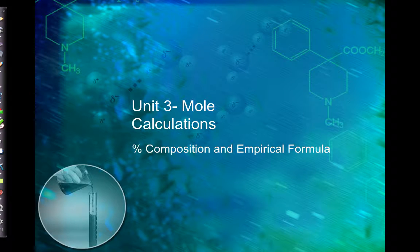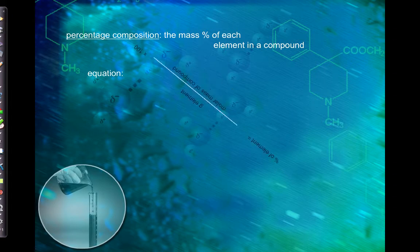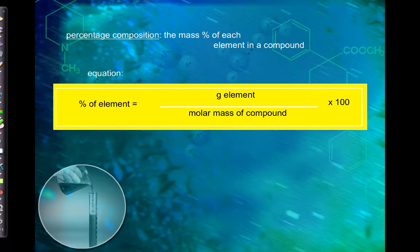In this video, we're going to review percent composition, empirical formula, and molecular formula. Percent composition is the mass percent of each element in a compound — what percentage of the compound is each element. To find it, take the mass of each element divided by the total mass of the compound, then multiply by 100.